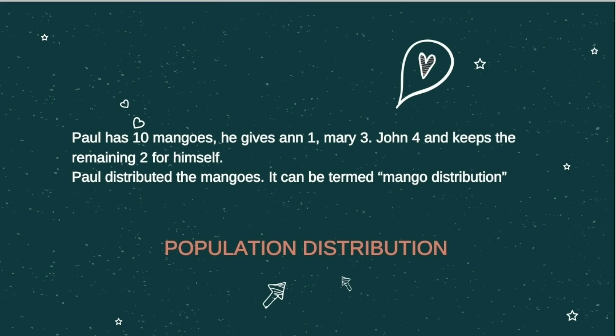Population distribution is simply how persons are scattered, how persons are located, where persons live. Just like Paul handing out his mangoes, persons live all over different locations — it's not an even distribution. Distribution varies, so we have more persons living in one area versus another area for different reasons.